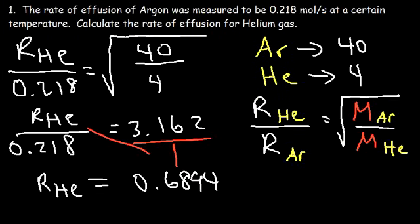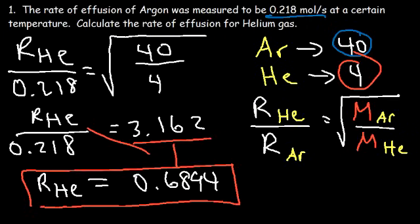Notice that argon is a heavier gas, so its rate of effusion is less than that of helium. Heavy gas molecules move slower, and helium is lighter than argon, so it has a much higher rate of effusion. Lighter gas molecules move faster.